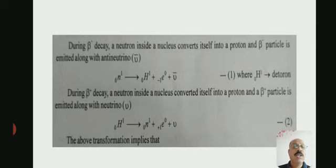During beta negative decay, a neutron inside a nucleus converts itself into a proton, and a beta minus particle is emitted along with an anti-neutrino (nu bar).